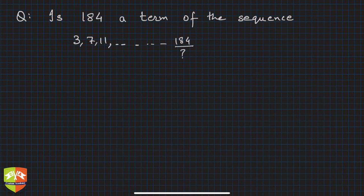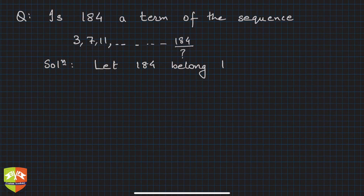We will start with the assumption that 184 is a part of the sequence. So let 184 belong to the given AP. This is an AP for sure because consecutive terms have the same difference, that is four.